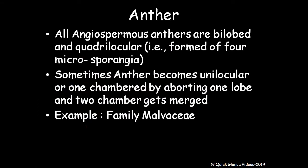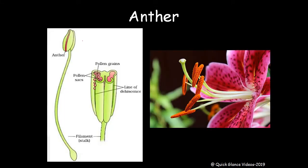Each anther consists of two lobes connected together by a suture called the connective. Each lobe contains two cavities called pollen sacs. In all angiosperms, anthers are bilobed and quadrilocular — there are four locules. Sometimes the anther becomes unilocular or one-chambered by aborting one lobe and the two chambers get merged, as seen in the family Malvaceae. In the picture you can see four locules, lines of dehiscence, pollen sacs, pollen grains, filament, and anther.